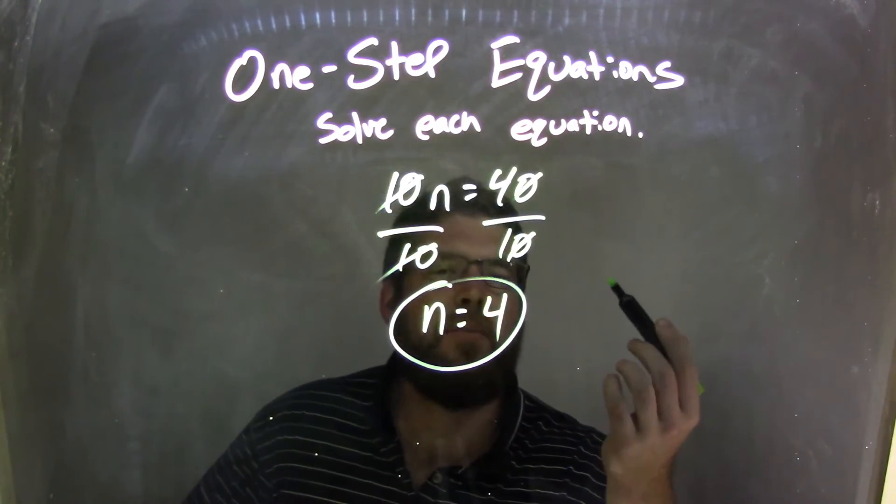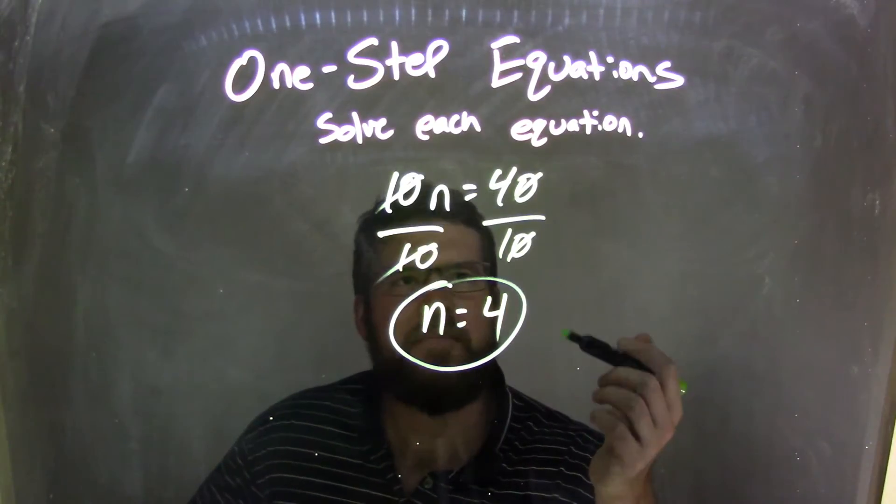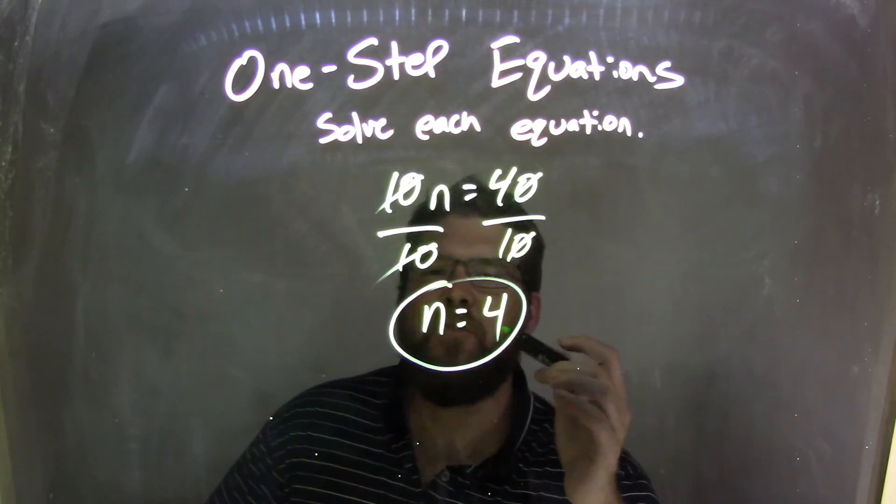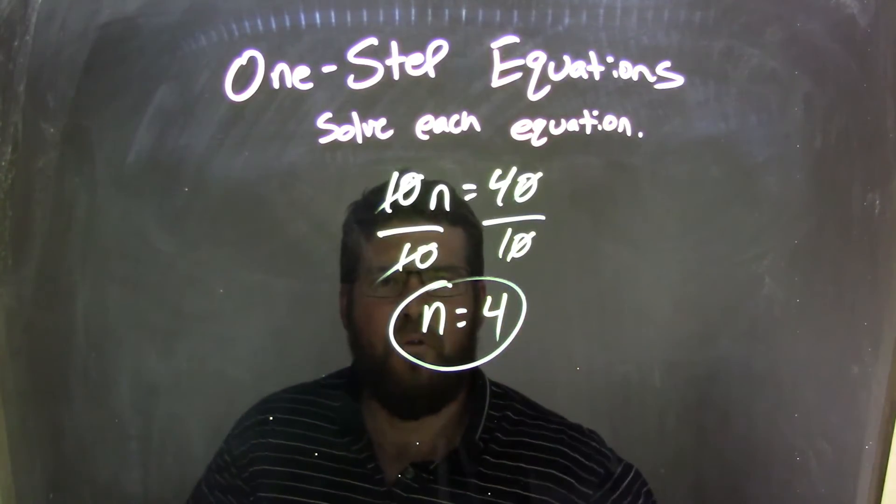Well, 4 divided by 1 is pretty simple, because any number divided by 1 is itself. So 4 divided by 1 is 4. Here it's all nice and finished. Our final answer is n equals 4.